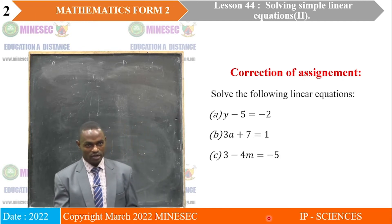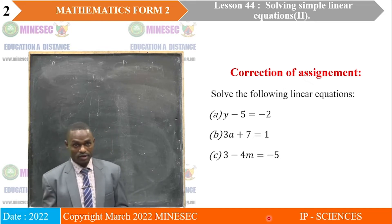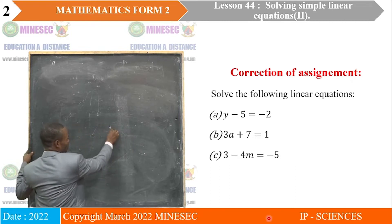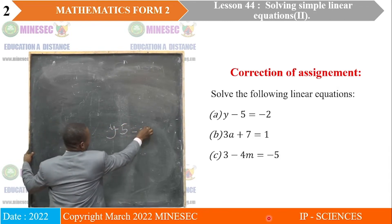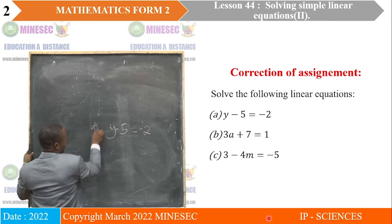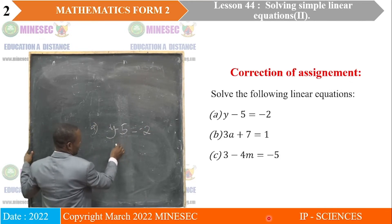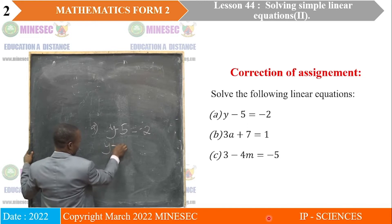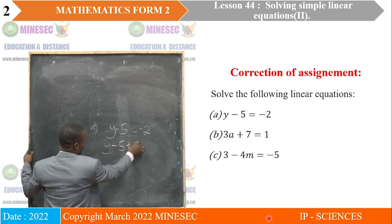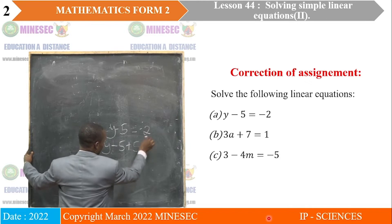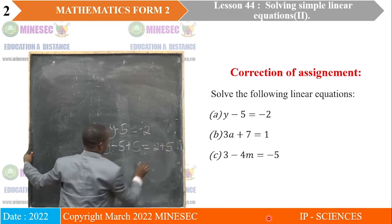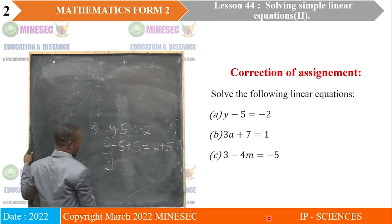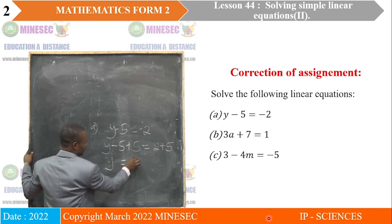Solve the following linear equations. A: Y minus 5 is equal to negative 2. We add 5 onto both sides: Y minus 5 plus 5. Negative 5 plus 5 gives 0, leaving only Y on this side, equal to negative 2 plus 5, which is 3. So Y equals 3.